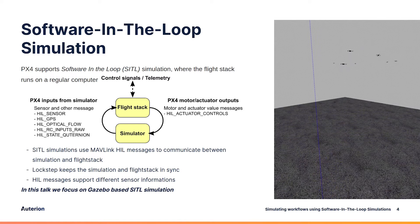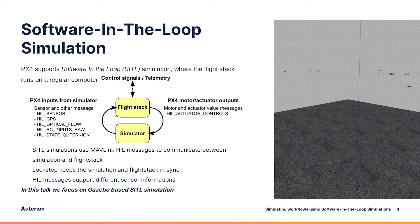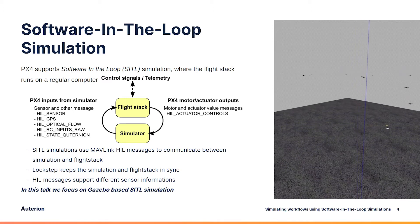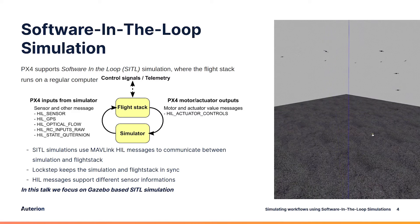The flight stack communicates with the simulator through the hardware-in-the-loop MAVLink messages, which include the actuator controls and various sensors. This allows you to test various actuator configurations and sensor configurations of the vehicle. Lockstep keeps the simulation and the flight stack in sync with the MAVLink HIL messages so that you don't have inconsistent results depending on the performance of the computer.